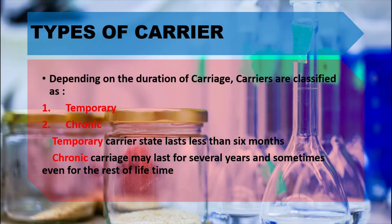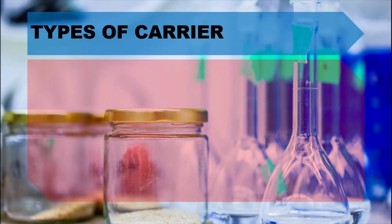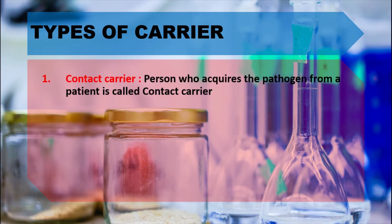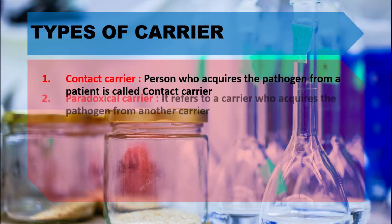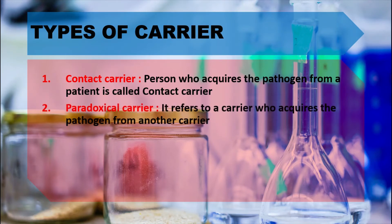There is one more method by which carriers can be classified. The contact carrier is a person who acquired the pathogen from a patient. The term paradoxical carrier refers to a carrier who acquires the pathogen from another carrier. So if you acquire the pathogen from a patient, you are a contact carrier; if you acquire it from another carrier, you are a paradoxical carrier.